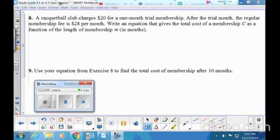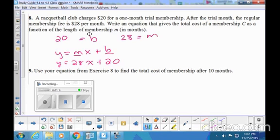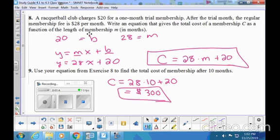A racquetball is charging $20 for a one-month trial membership. How can we use that number? A y-intercept. And then the 28 per month is going to be your slope. You can just put it straight into slope-intercept form. M is 28 and b is 20, but they wanted you to use C as the cost, so y has to be a C, and they want you to use M for months, so x has to be M. We have to find the total cost after 10 months. We got 300.